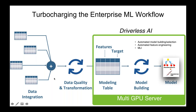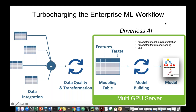I want to start with a typical enterprise machine learning workflow. On the left is the classic pain point of integration, assembly, and cleaning of data. On the right is another set of pain points associated with the drive to build higher performance models — things like feature engineering on the modeling table, using more complex models like gradient boosted trees, and ensembling and stacking of models.